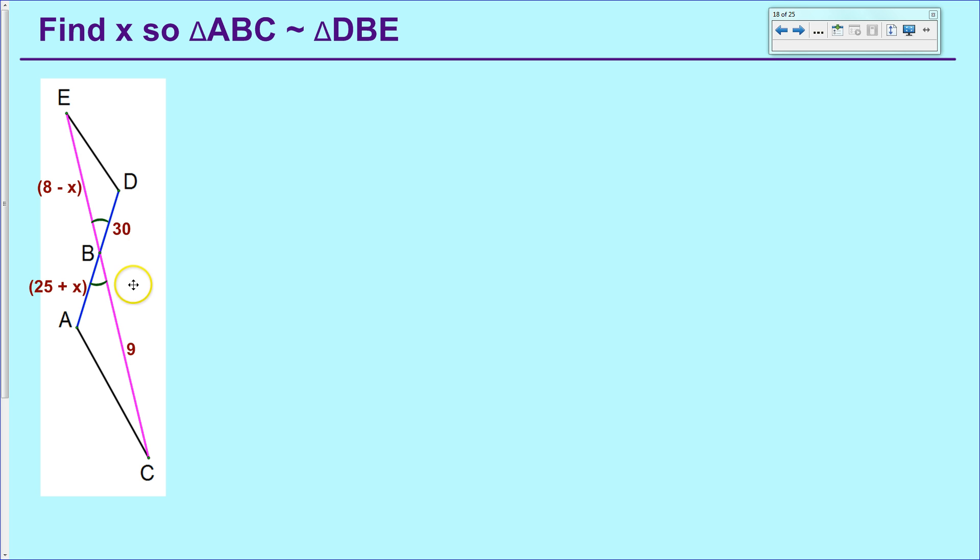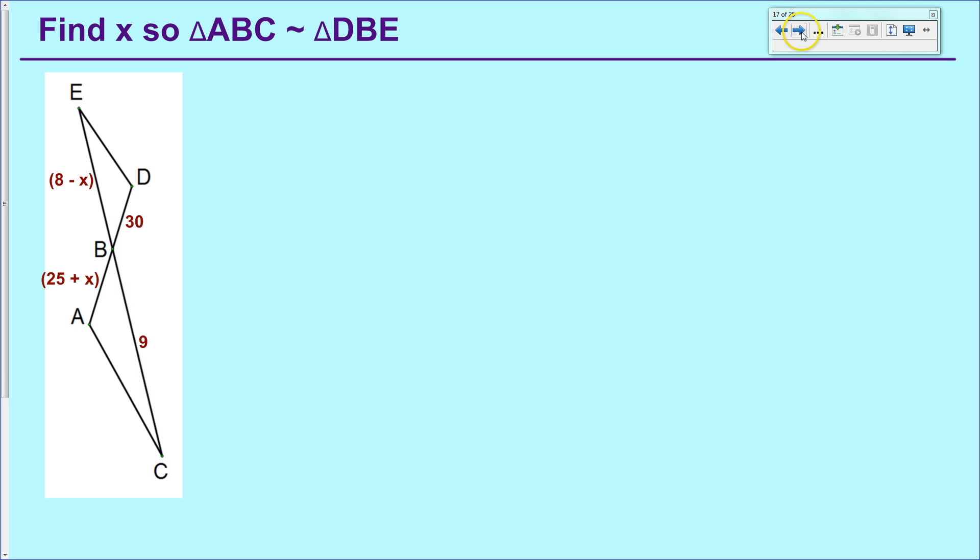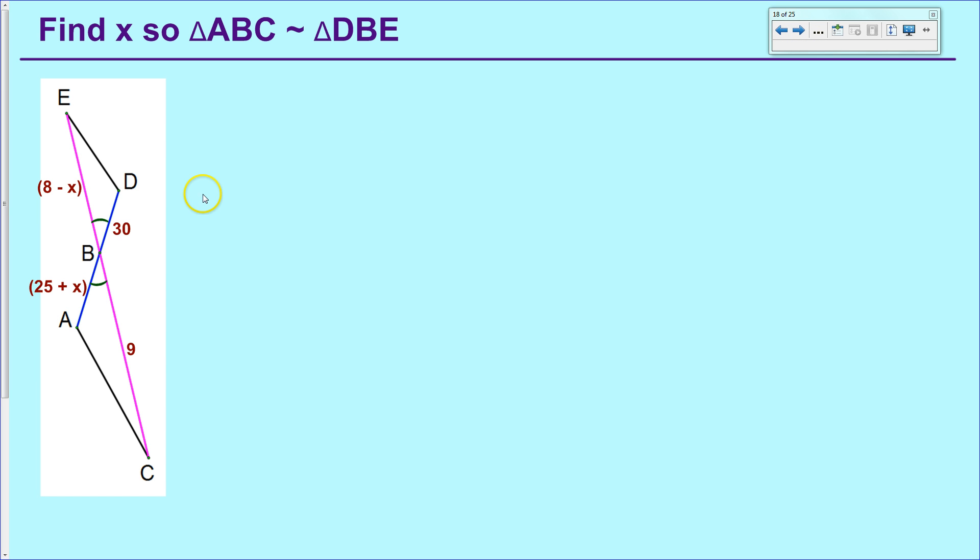The only other tricky bit is that you have to make sure that you sandwich an angle that you know. And the only angle that we knew, and none of them were labeled in the original drawing, you'll notice, none of them were labeled. The only one that we know is the ones that are vertical. And since vertical angles are congruent to each other, that makes it nice. So we have that first condition, we have a set of congruent angles congruent to each other.